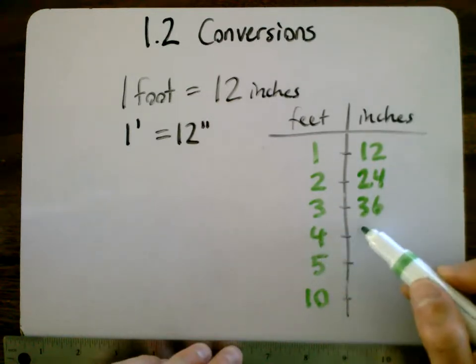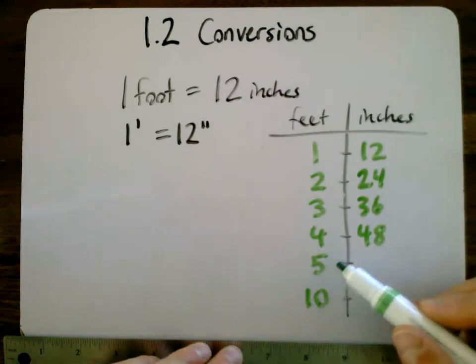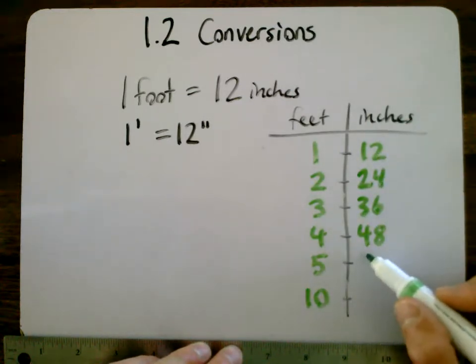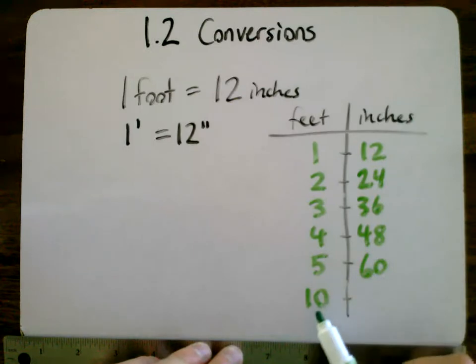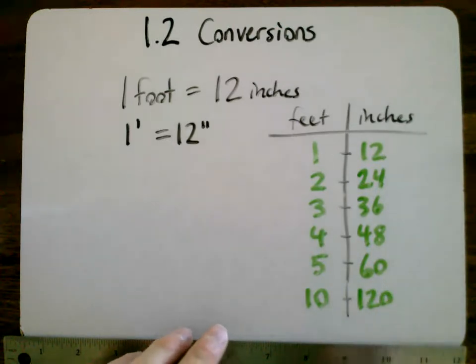4 feet is going to be 48 inches. 5 feet, that's 5 times 12, is going to be 60 inches. And for 10, we're going to do 10 times 12, and that's going to give us 120 inches.